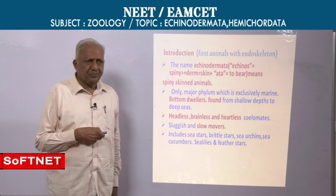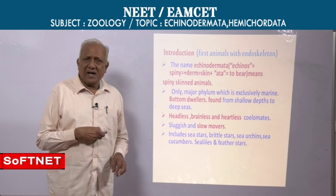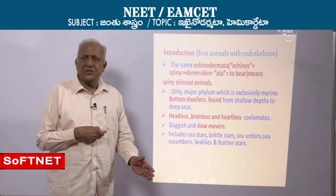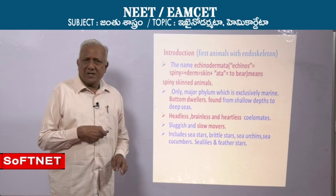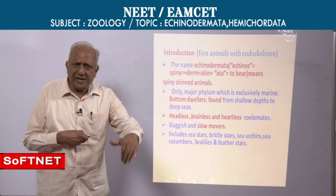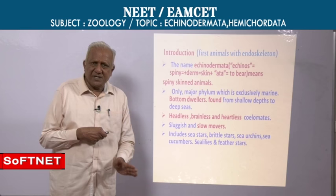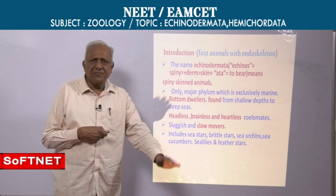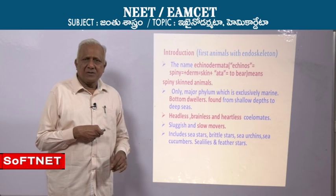There are certain minor phyla — for example, ctenophores — that are exclusively marine. But Echinodermata is a major group that is exclusively marine. They live right from shallow depths at the seashore to the deep sea. Crinoids are mostly deep-sea forms; starfishes and brittle stars are found in shallow water. They are free-living forms. Some are carnivores like starfishes and brittle stars; some are herbivores; some are filter feeders.